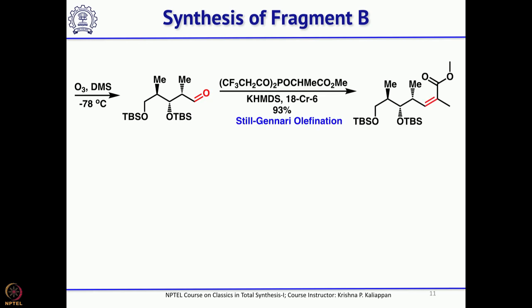Looking carefully at the structure of Discodermolide, the double bond connecting fragments A, B, and C is a Z-isomer. To get the Z-isomer, the Still-Gennari olefination must be used. Here, instead of a normal alkyl ester phosphonate, if you use a trifluoroethanol ester phosphonate, that gives the Z-isomer as the major product. That is what Schreiber used to get the Z-isomer as the major product.